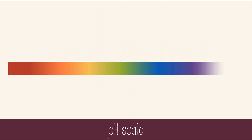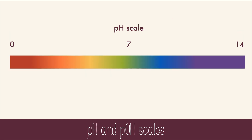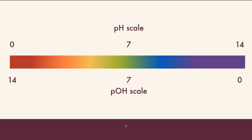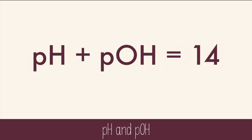On the pH scale, acids have a pH below 7, and bases have a pH above 7. 7 is the neutral pH. The pH scale measures the power of hydrogen, and the pOH scale measures the power of hydroxide. Since they have an inverse relationship, the pOH scale has numbers in the opposite direction. So an acid with a pH of 3 has a pOH of 11. The pOH can be calculated from the concentration of hydroxide ion the same way as pH: pOH equals the negative log of the hydroxide ion concentration. The pH plus the pOH will always equal 14, so you can easily find the pOH if you know the pH and vice versa.